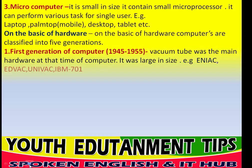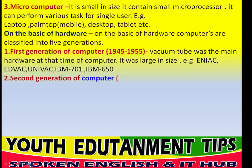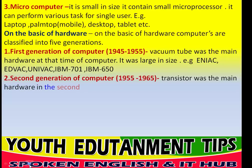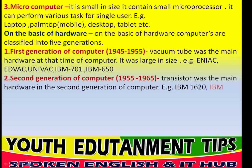In the first generation, the vacuum tube was the main hardware. It was large in size. Examples of first generation computers are ENIAC, EDVAC, EDSAC, IBM 701, and IBM 650. Now we'll talk about second generation of computer.